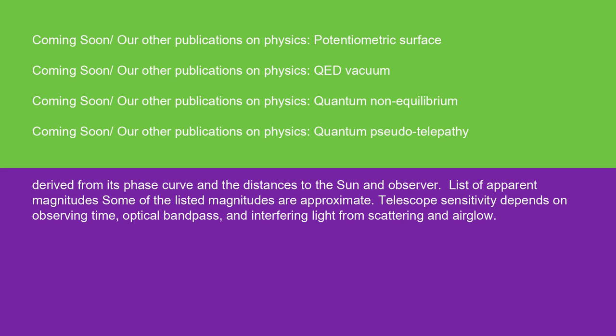List of apparent magnitudes: Some of the listed magnitudes are approximate. Telescope sensitivity depends on observing time, optical bandpass, and interfering light from scattering and airglow.